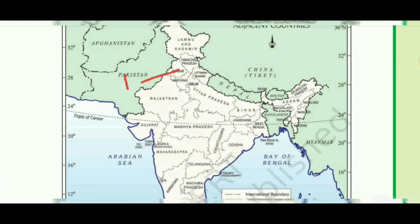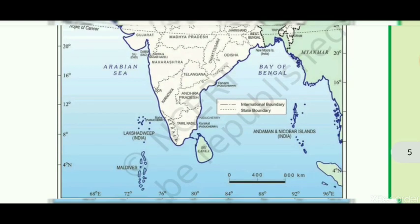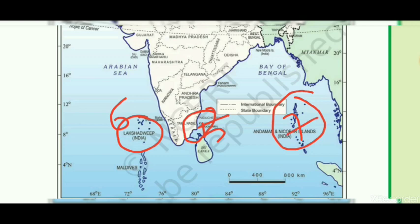The seven Union territories are: first, Chandigarh — capital of Punjab as well as Haryana; second, Delhi; third, Daman and Diu; fourth, Dadra and Nagar Haveli; fifth, Puducherry — in the state of Tamil Nadu; sixth, Lakshadweep; and seventh, Andaman and Nicobar Islands.